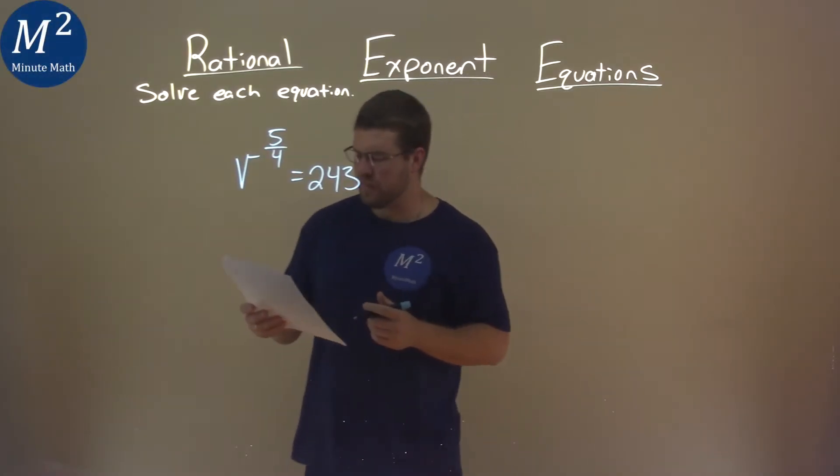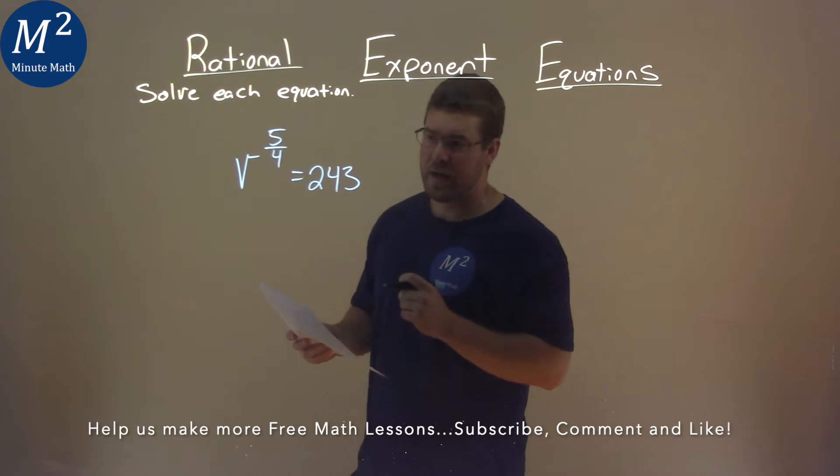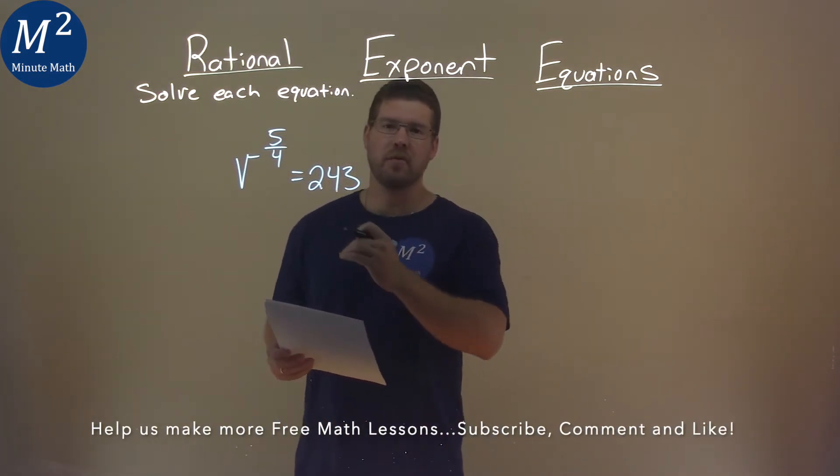We're given this problem right here, v to the 5 fourths power equals 243, and we have to solve this equation.